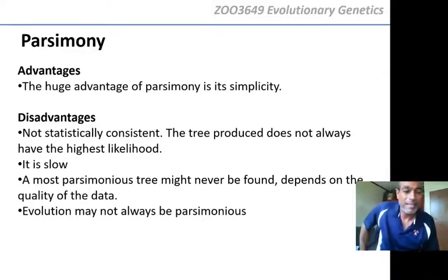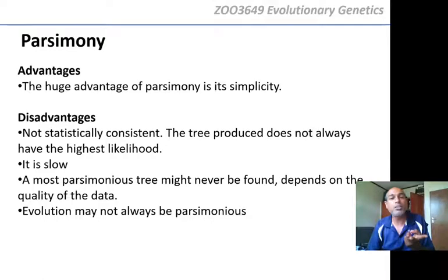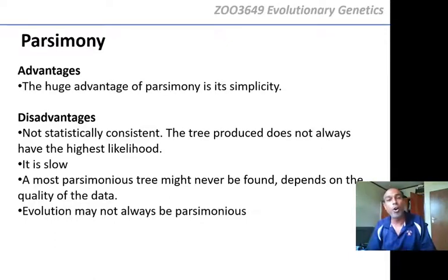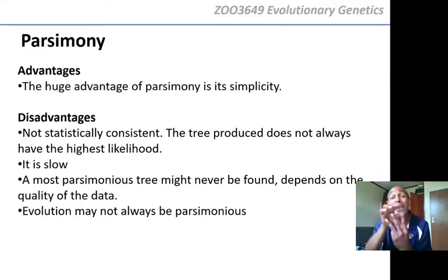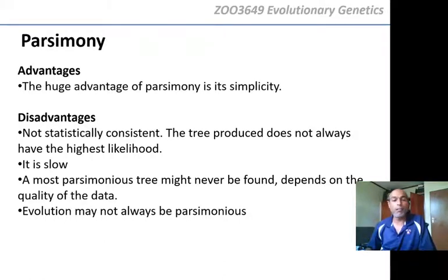The last disadvantage is that evolution may not be parsimonious. For example, convergent evolution of a streamlined body shape — the dorsal fin and caudal fin — evolved independently in sharks, ichthyosaurs, and dolphins. If we used parsimony with that character, we would get a homoplasy and the wrong tree, because that body shape evolved at least three times independently. So evolution is not always parsimonious, and in such cases parsimony will give you the wrong tree.